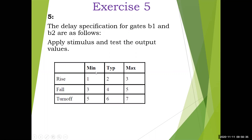The delay table is as follows: rise time minimum/typical/maximum values are 1, 2, 3; fall time minimum/typical/maximum values are 3, 4, 5; turn-off delay minimum/typical/maximum values are 5, 6, 7. Apply the stimulus for this design and test the output values. Pause the video and note down the question.